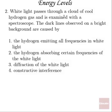Number two, white light passes through a cloud of cool hydrogen gas and is examined with a spectroscope. The dark lines observed on a bright background are caused by, well, that's going to be caused by the absorption of the specific frequencies that allow electrons to jump to higher levels. So that's going to be correct answer number two, the hydrogen absorbing certain frequencies of the white light.